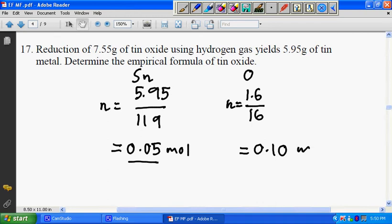This is ratio 1 to 2. So the empirical formula of tin oxide is SnO2. So let's move on to another question, question 18.